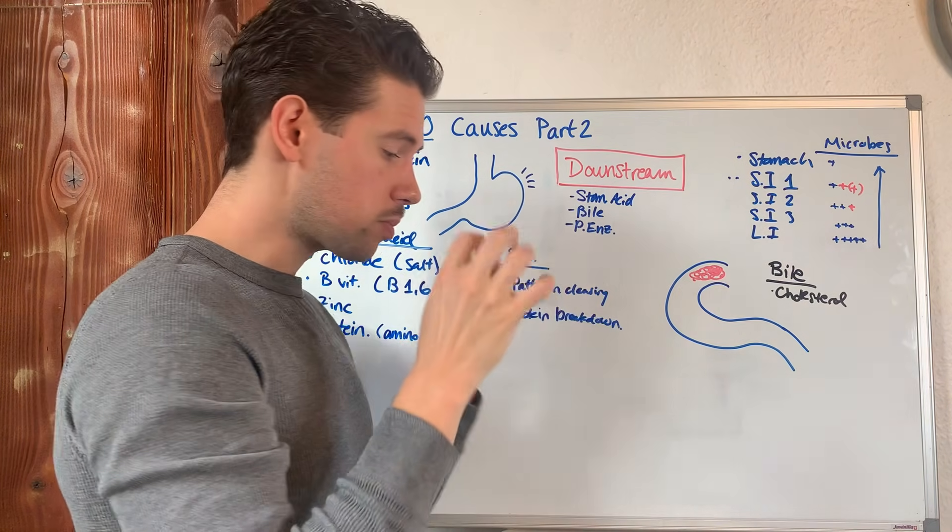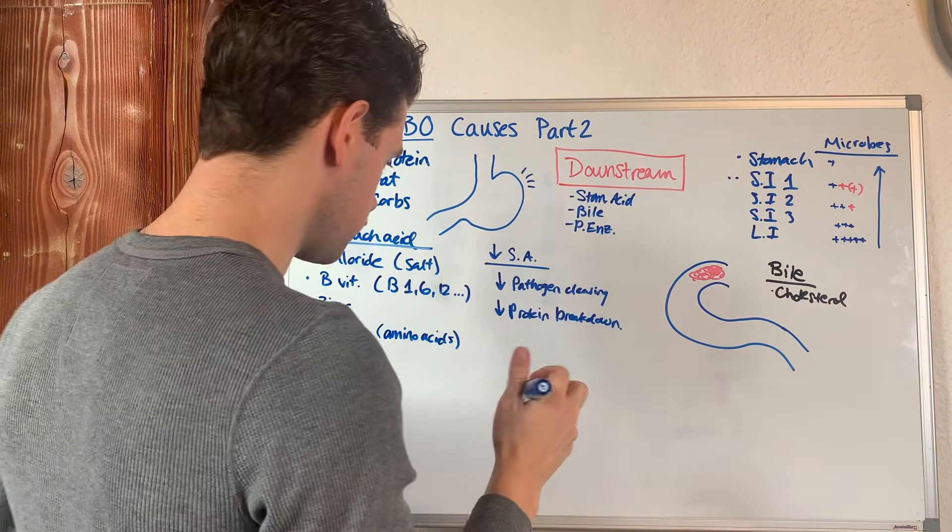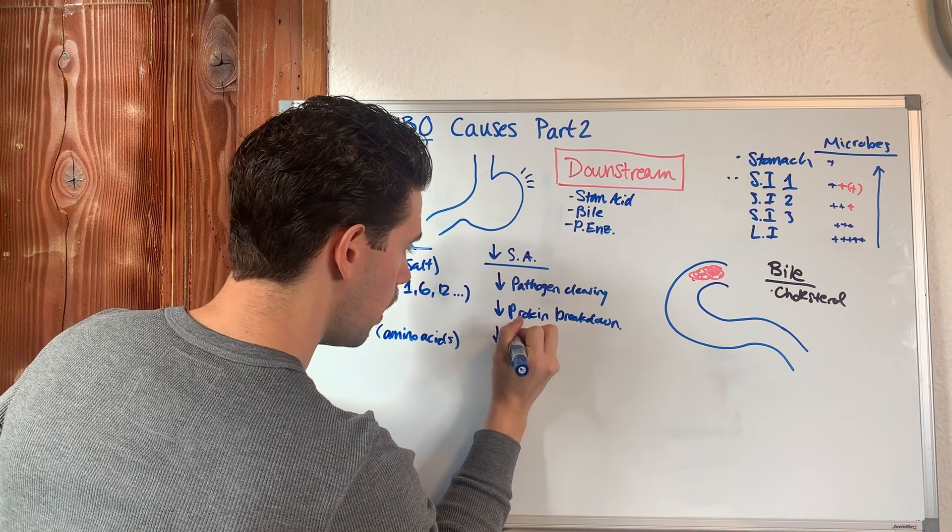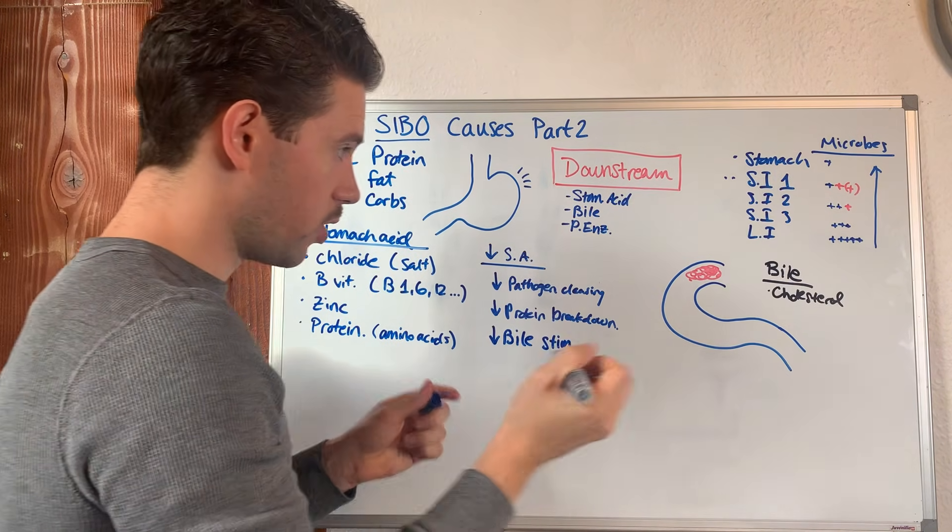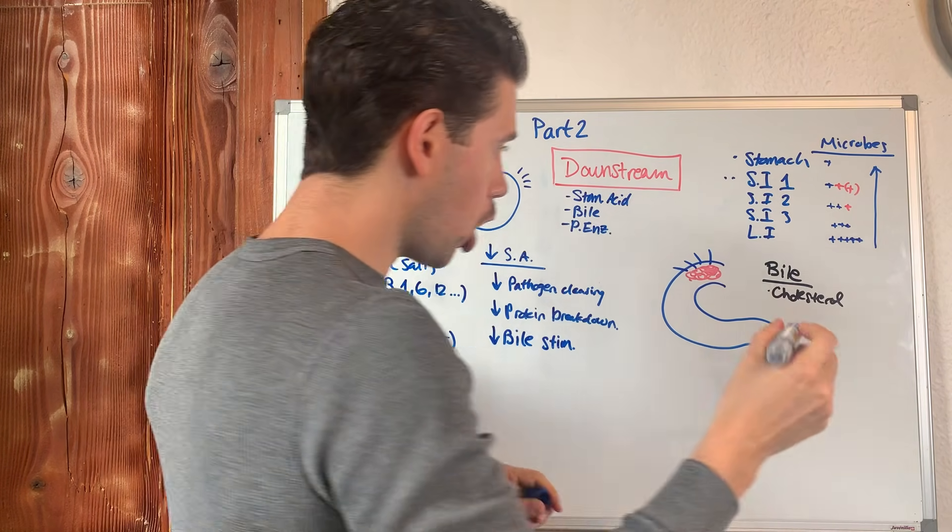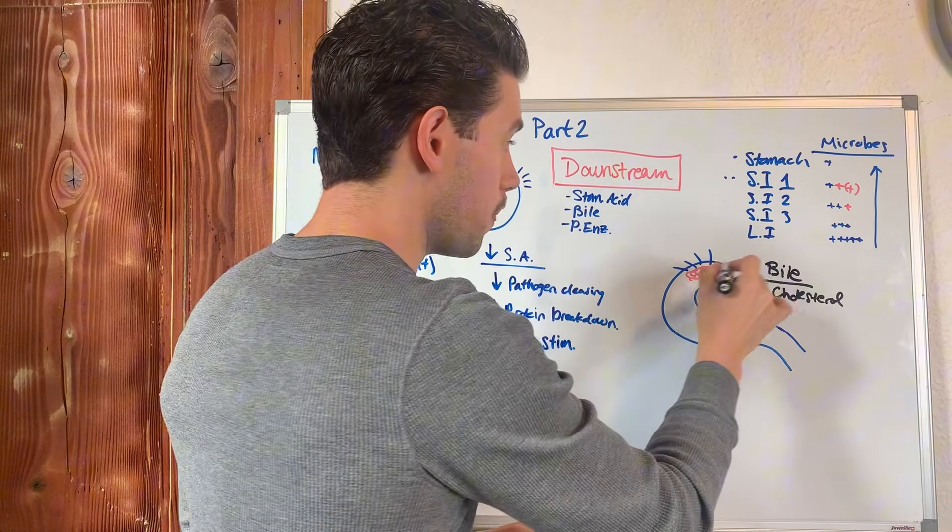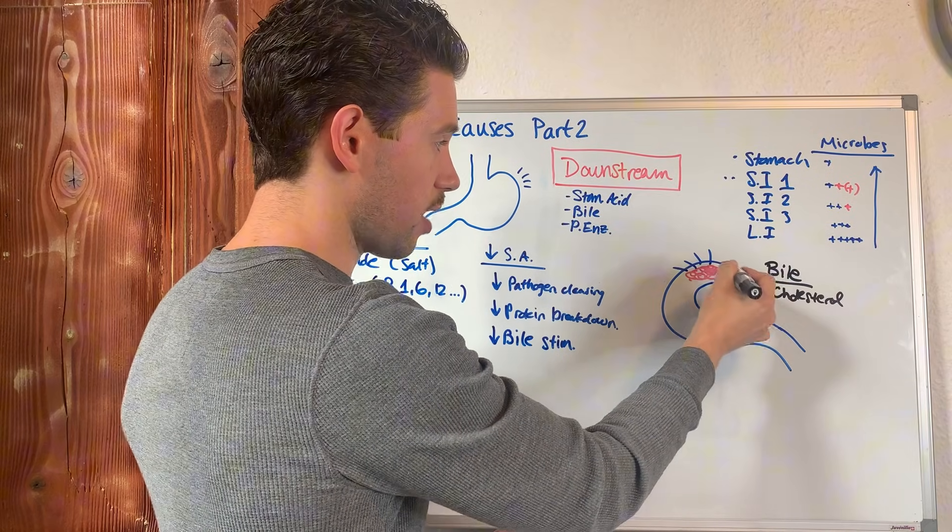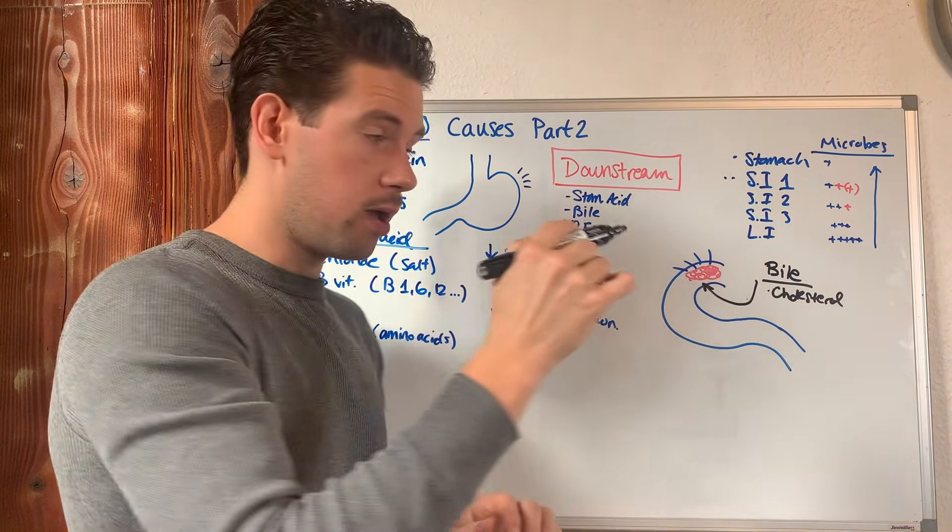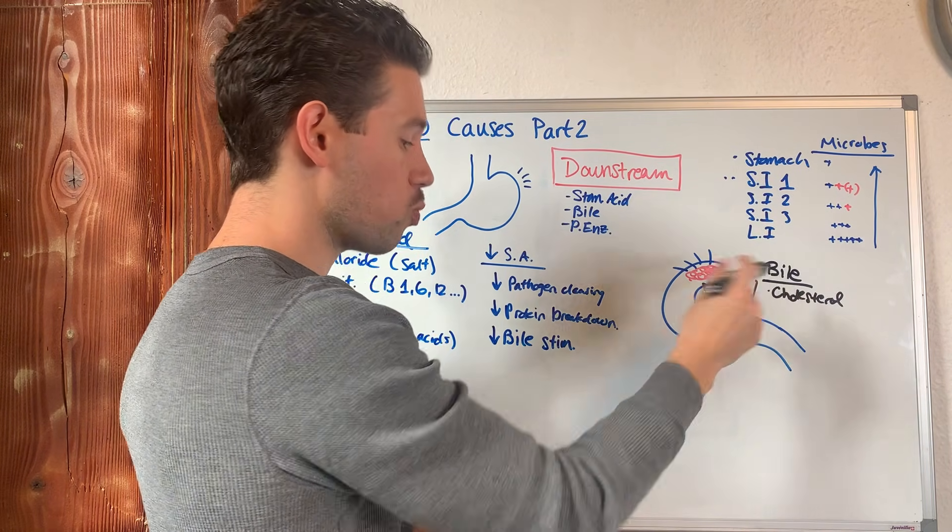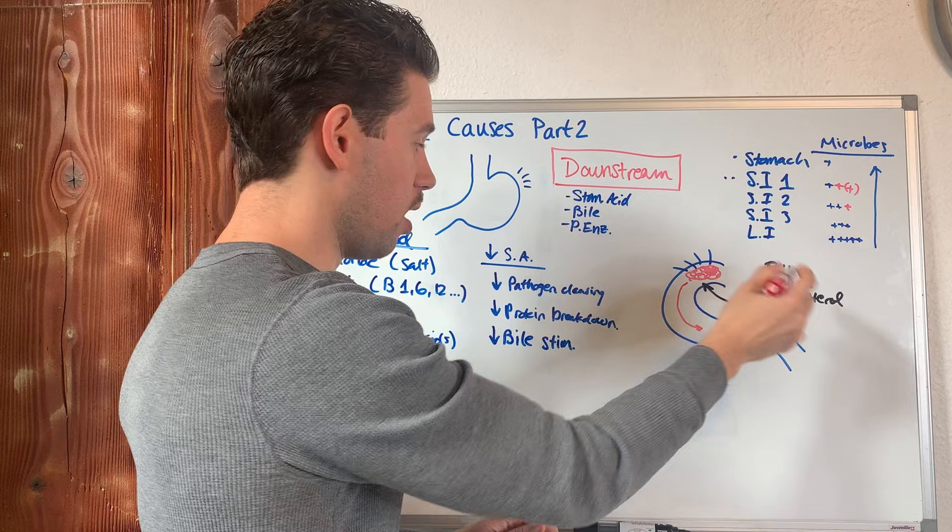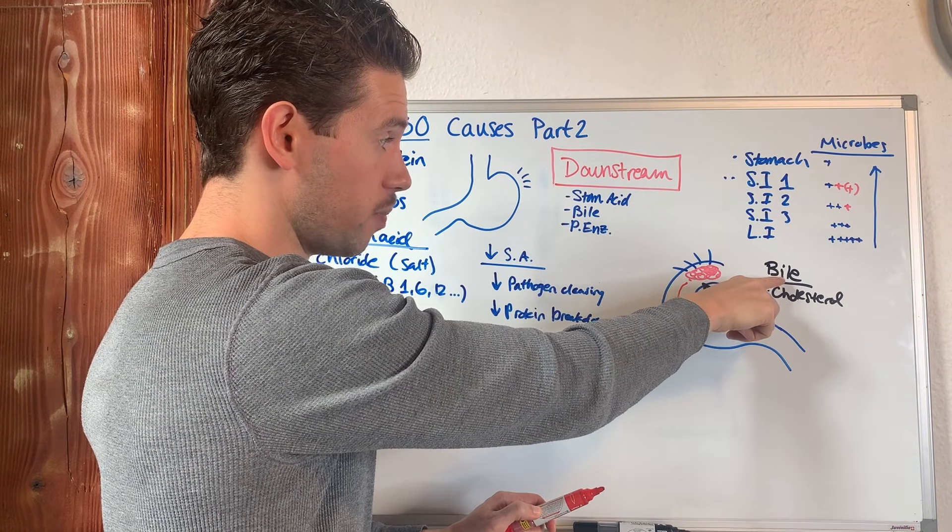Your level of stomach acid: if you have low stomach acid levels, low pathogen clearing, low protein breakdown, low bile stimulation. The acidity from here is going to trigger the gallbladder, which is going to store the bile. Depending on how much acidity is in this section will tell the gallbladder how much bile to release. If this signal is not acidic enough, this is going to release less bile, which means that as this moves its way on down, it's less digested.